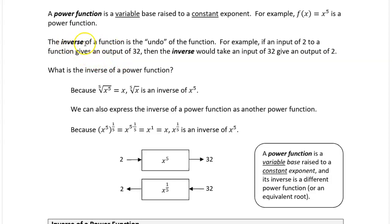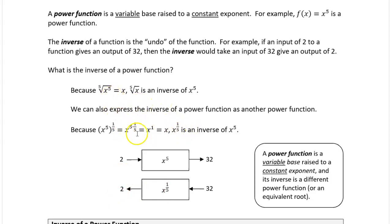I also wanted to review what an inverse is. If we want to take the inverse of a power function, for example x to the fifth, an inverse is just an undo of the function — it's like going back in time. We put a number into our function and got an output, and we want to figure out what the input was. For example, we put in the number two into the function x to the fifth, and it gives us 32. If we want to get that input back, we want a function where we can put 32 in and get our original number out. With a power function, we would use a root.